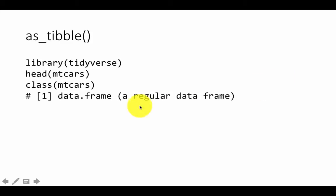The function as_tibble can be used to convert existing data frames into tibbles. To do that, this whole tibble thing is to be found in the library package tidyverse. Once tidyverse is loaded, we can take a look at the mtcars data frame. If you do head mtcars, you see the first six rows, and if you do class mtcars, you see that it is actually a regular data frame.